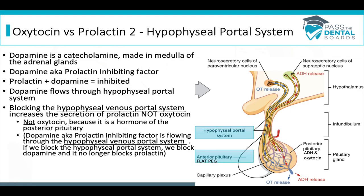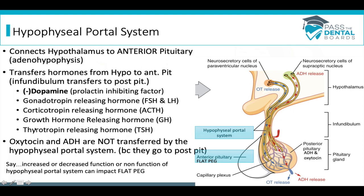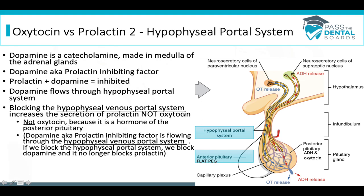As a review, dopamine is a catecholamine made in the medulla of the adrenal glands. Dopamine flows through the hypophysial portal system and inhibits prolactin — it's the prolactin inhibiting factor. If you get a question about a blockage in the portal system, there's no dopamine to inhibit anything. The exam will throw oxytocin in as a distractor, but remember oxytocin goes to the posterior pituitary, not the anterior. Always pick prolactin when the question involves dopamine or the hypophysial portal system.